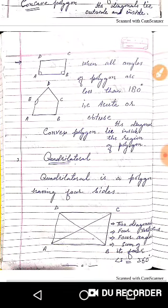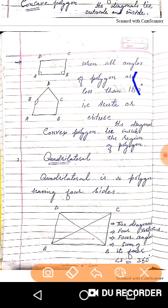The next type of Polygon is called a Convex Polygon. In the case of a Convex Polygon, I have drawn here two figures — a four-sided figure and a five-sided figure: a quadrilateral and a pentagon. When you observe their angles, they are both either acute or obtuse angles.